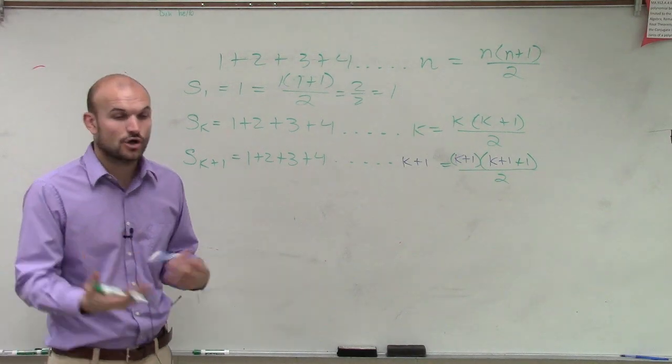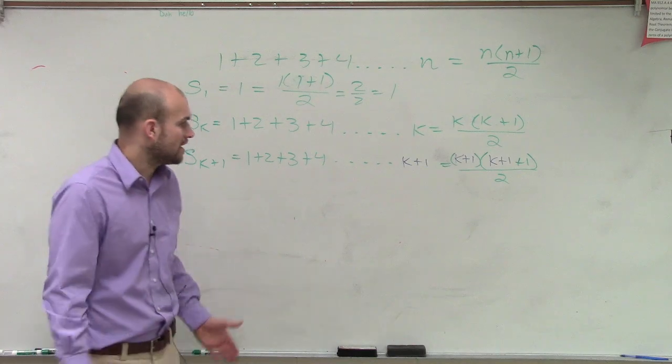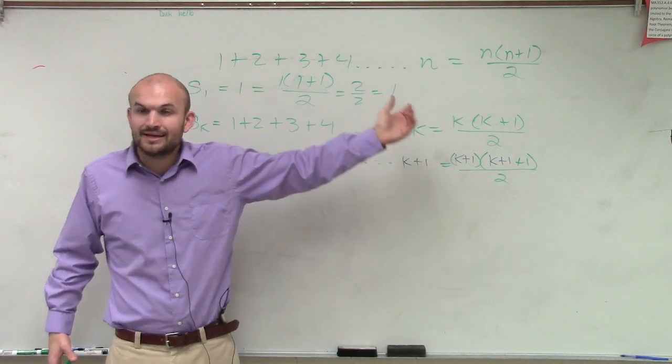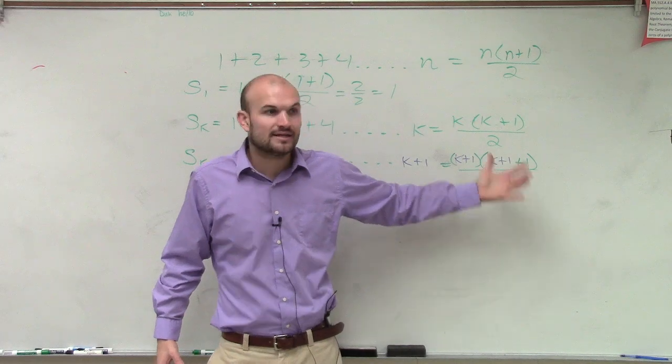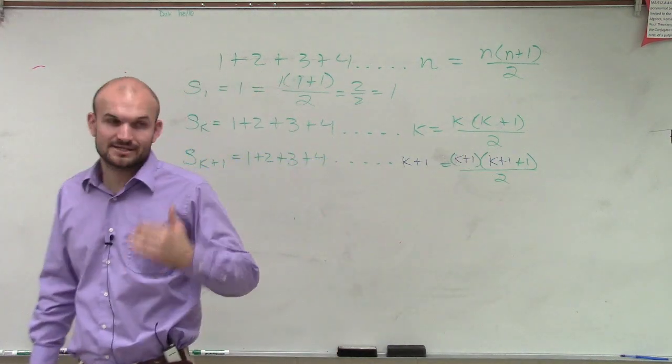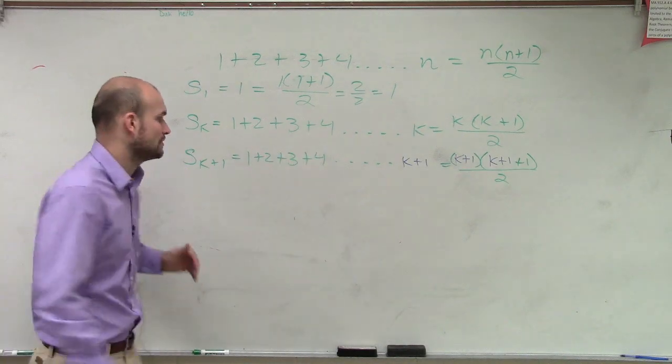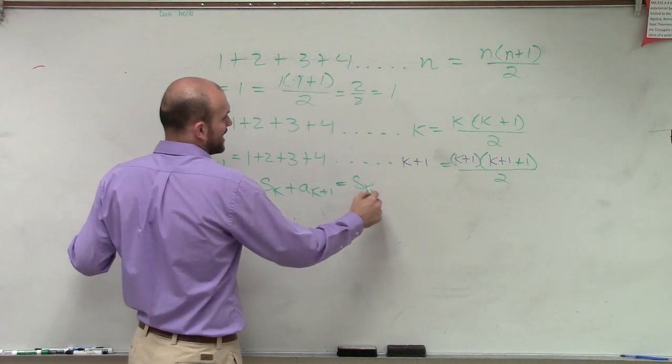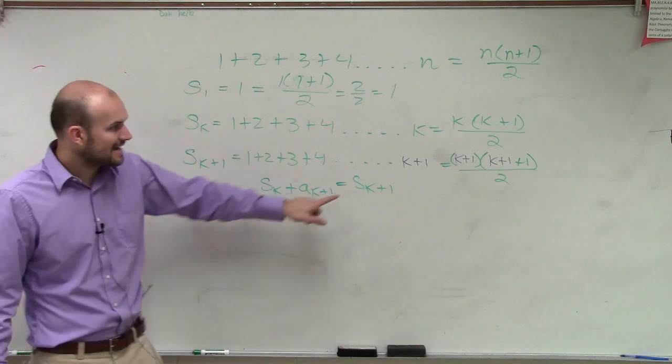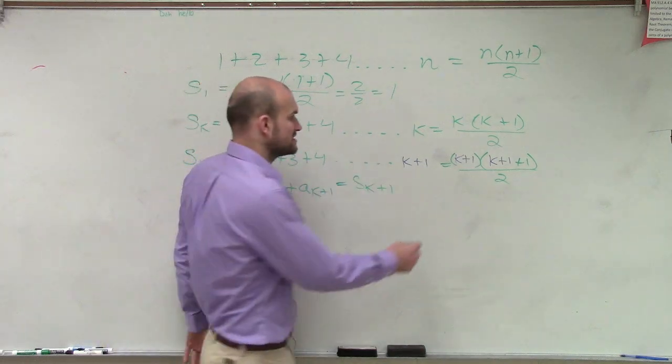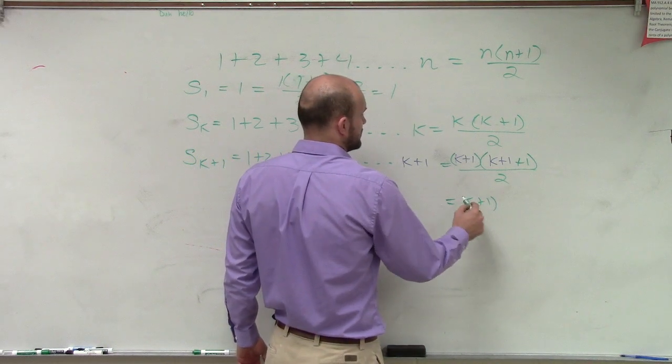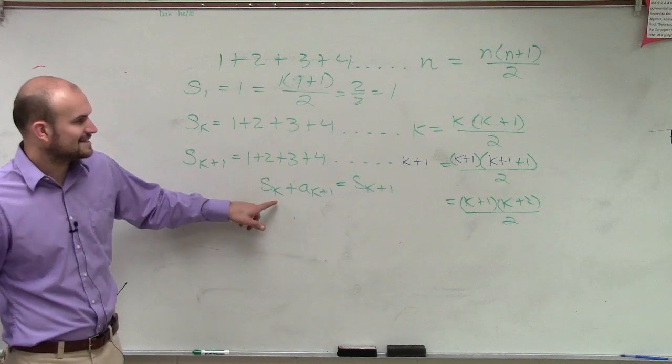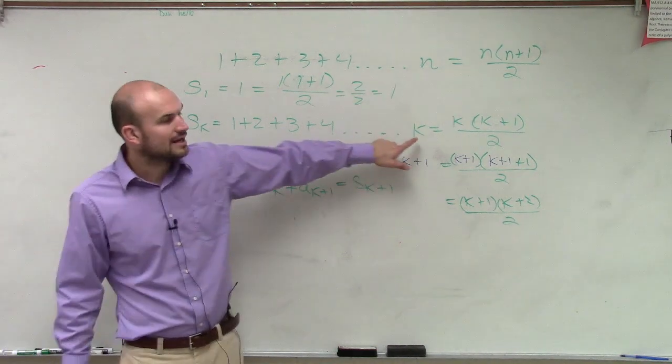So now, to show that we have this working for us, we need to be able to show if s of k plus the next k plus 1 term, if that's equal to s of k plus 1, then it's going to be true for all of our values, all right? And it's going to imply that all of our subsequent values on there will be true. So what I need to show is if s of k plus a of k plus 1 is equal to s of k plus 1. So s of k plus 1 is right here. So what does s of k plus 1 simplify to?